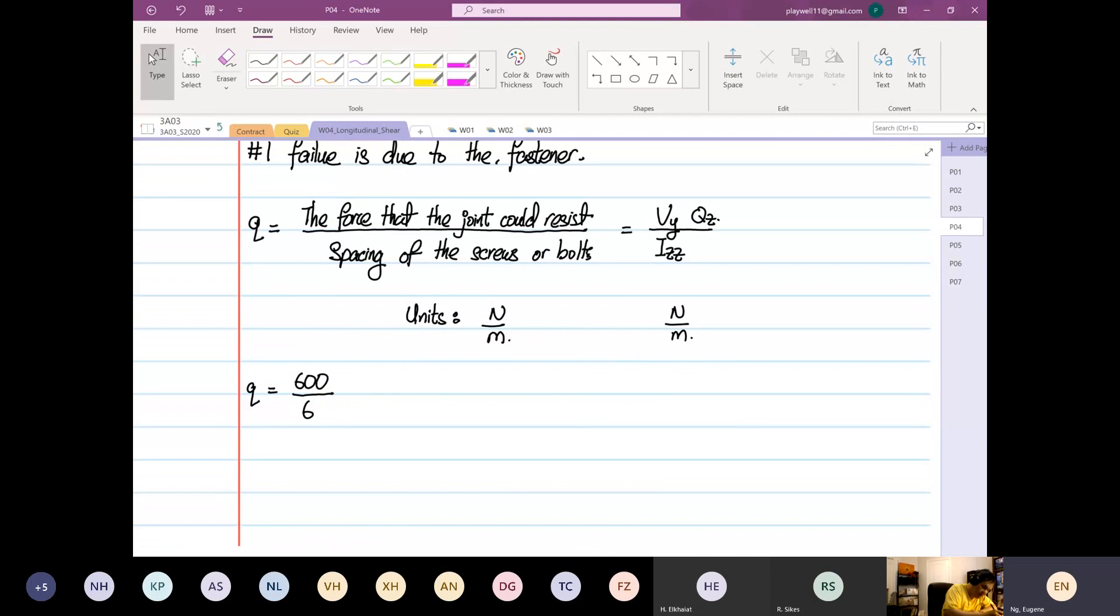So double shear, you have to multiply by what? Two. Right? The 600 is given in single shear. And structure is under double shear configuration. So this will be equal to 600 times 2 divided by 6 is equal to 200 pound per inch.